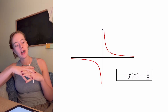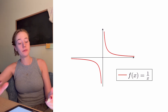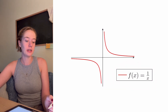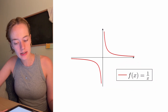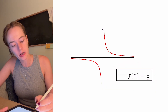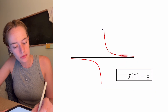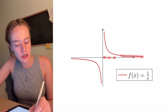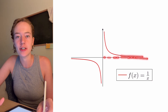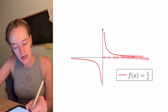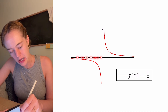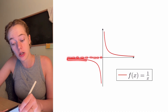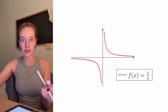A good introductory example to asymptotes is this function, because maybe you haven't seen asymptotes before, but you've probably seen this function. You can see this interesting behavior: as we take our x's to positive infinity, our function is getting really, really close to the x-axis, but it's never touching it. The same thing is happening if we take our x's to negative infinity — our function gets really, really close to the x-axis, but it's never touching it.